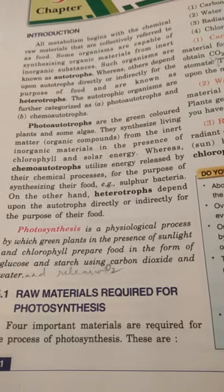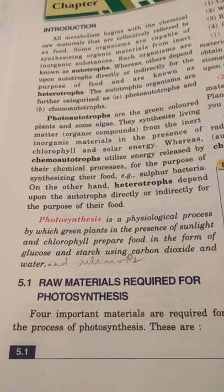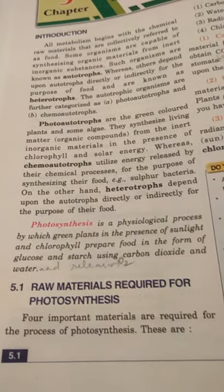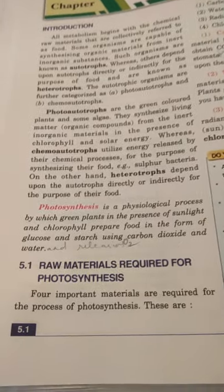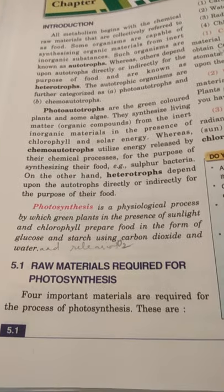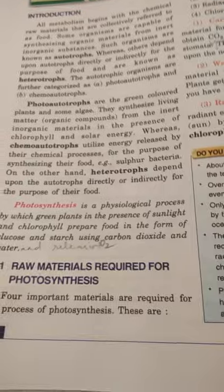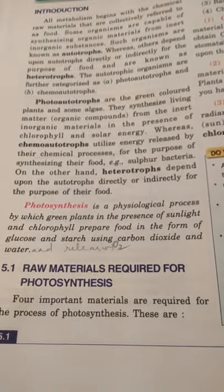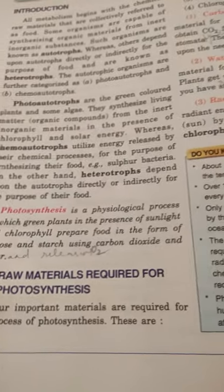Photosynthesis is a physiological process by which green plants, in the presence of sunlight and chlorophyll, prepare food in the form of glucose and starch using carbon dioxide and water, and release oxygen. Photo autotrophs are organisms that carry out this process. Photosynthesis is a very important life process because it provides food for all animal life including humans, and also produces the life-supporting free oxygen in the atmosphere.